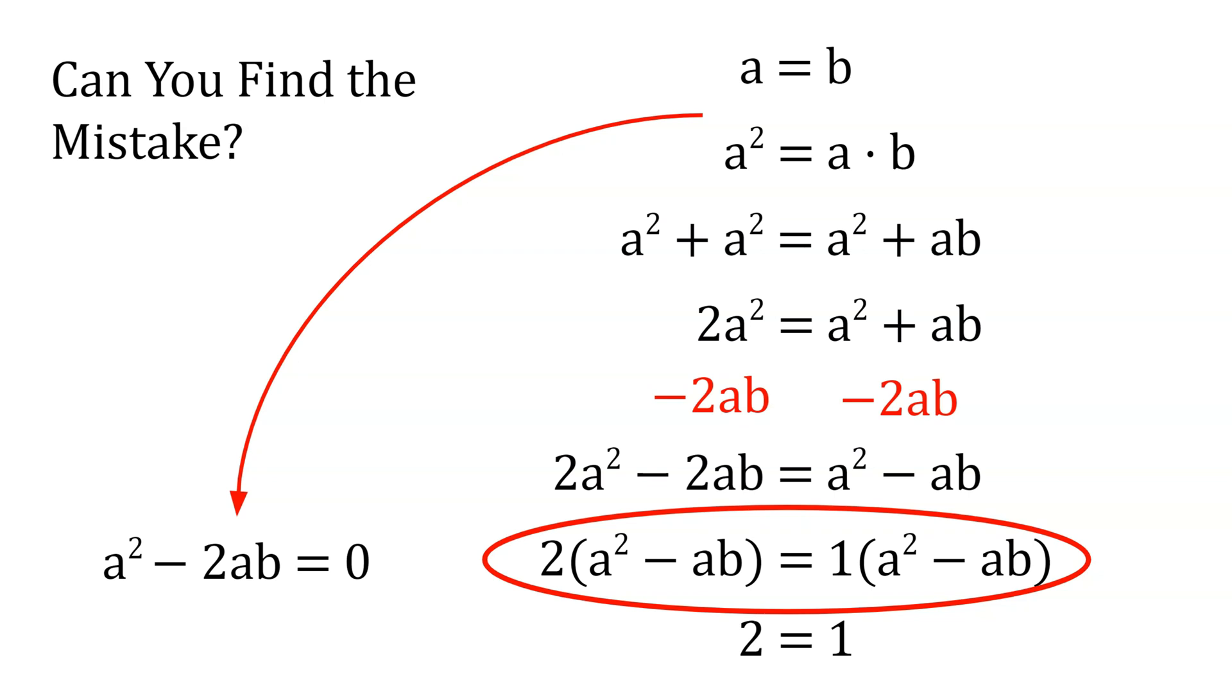Therefore, it is not legitimate to divide both sides of the equation by a squared minus ab, because that would be division by 0, which does not make any sense. In a sense, this proof boils down to saying 1 times 0 equals 2 times 0, therefore 1 equals 2, which is not correct.